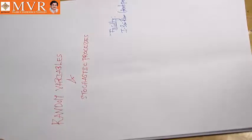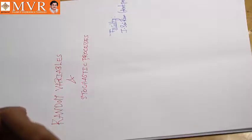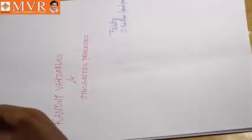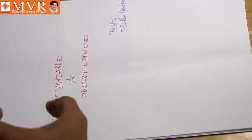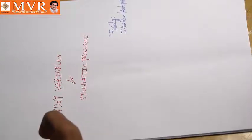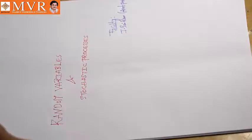This lecture will be just like an introduction lecture — how this subject will be structured, what will be the future scopes, what will be the important concepts, and what will be the in-depth of the subject. The RPS subject — random variables and stochastic process — is like a mathematics subset, a theory mathematics subject, similar to algorithms.